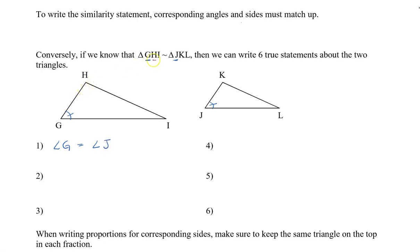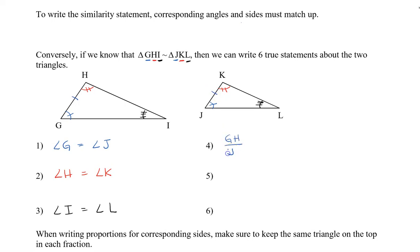We also know that angle H, the middle letter, equals angle K, because that's the middle letter — and we'll mark this with two lines. And then finally, we know that angle I, the last letter, is equal to angle L, and I'll mark this with three lines. We also know three other things: side GH divided by JK is equal to side HI divided by KL.